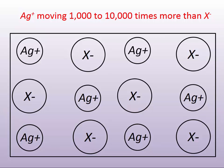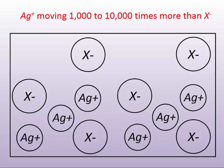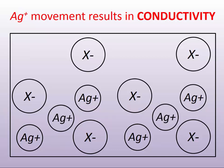Silver is moving almost a thousand to ten thousand times more often than a halide does in the grain by this Frenkel defect. This motion — this falling out of its position into the interstitial areas — is what gives silver halide that conductivity, that silver ion motion. That silver motion is going to be critical for silver development.